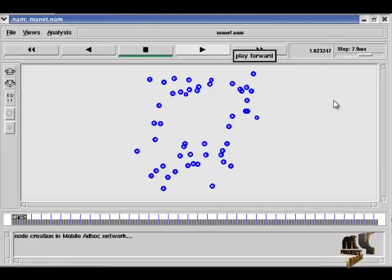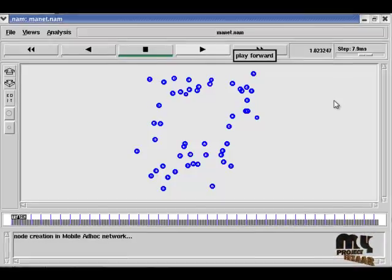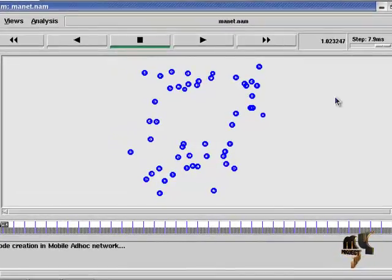When terminal is opened, type ns space filename.tcl. When typing that, it produces one NAM window. NAM window is nothing but network animator window.